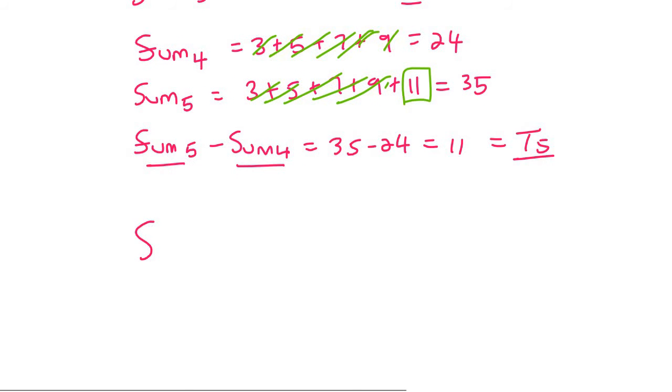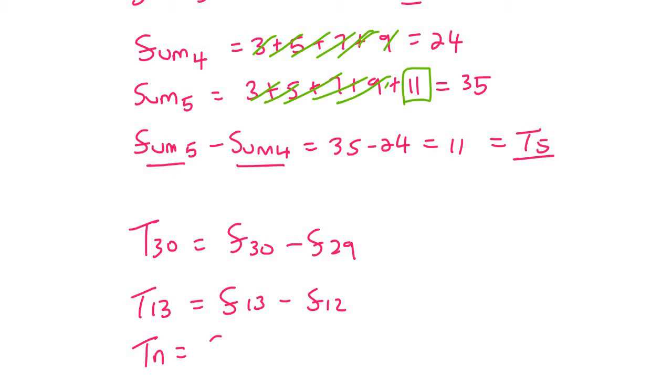If you want to find term 30, then you say sum of 30 minus sum of 29. If you want to find term 13, then you say sum of 13 minus sum 12. If you want to find the general formula T_N, then you say S_N minus S_(N-1). One more: term 15 you would say S_15 minus S_14. See that? That is a mathematical property that you need to know.